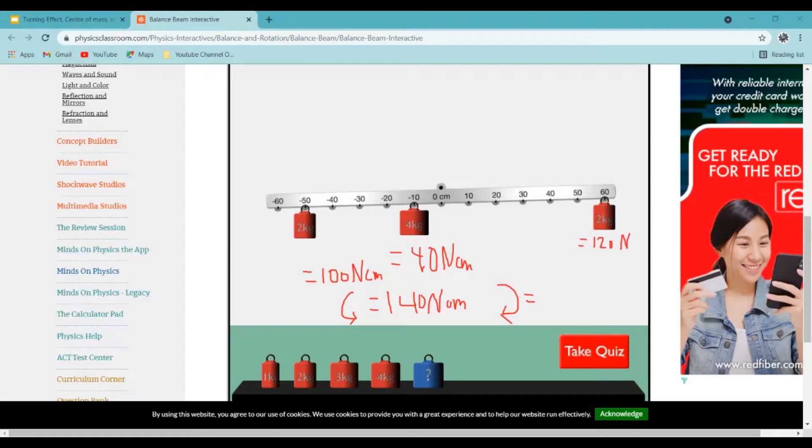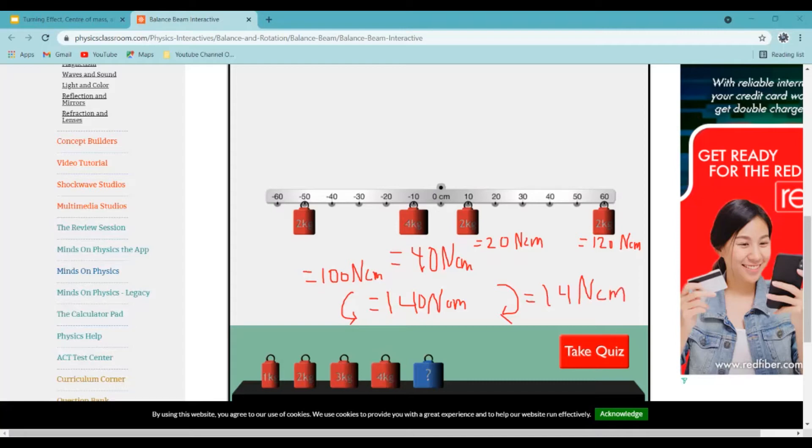And if I put something like 2 also in 10, that would be equal to 20 newton centimeters. So overall that would be equal to 140 newton centimeters. So this should be balanced. But the symmetry doesn't look right.